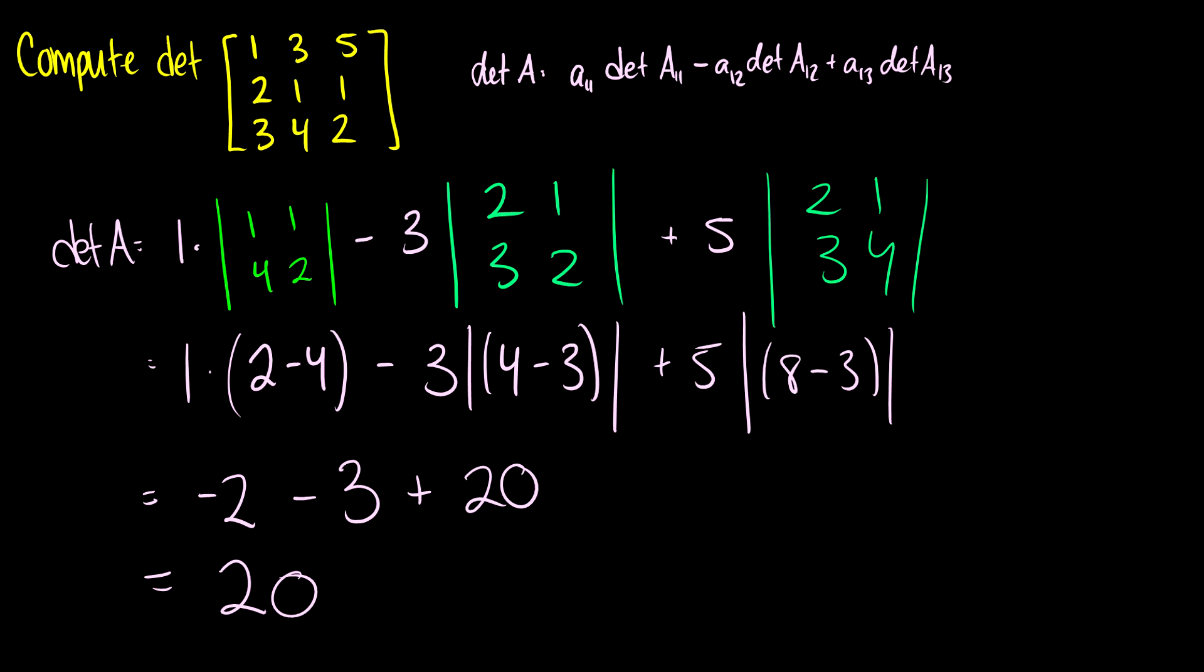Okay, so this is a recursive definition. Because we take three by threes, four by fours, five by fives, and we reduce them until we get down to two by twos, which we can then solve numerically. So if I ever give you a four by four determinant, it is going to take quite a bit of time. So I probably won't do that.